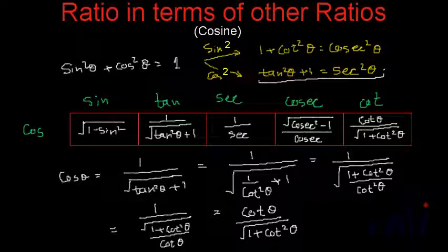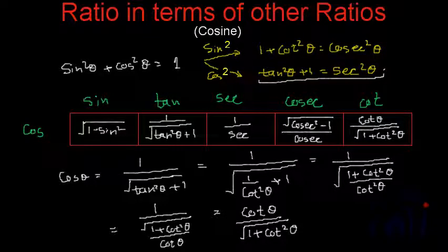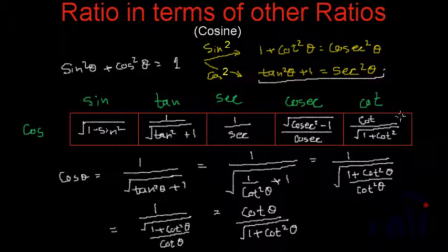We are not writing theta anywhere in the table, so the conversion of cos in terms of cot is simply cot divided by square root of 1 plus cot squared.